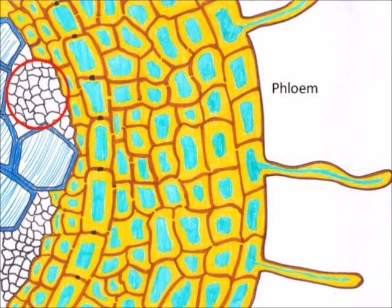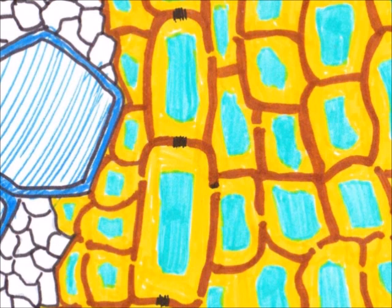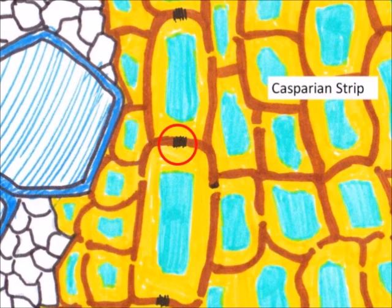I've also shown the phloem, although that isn't important in this video. If we look close up, the other area that I ought to point out at this point is the Casparian strip, which has a key role to play.